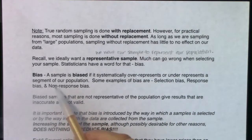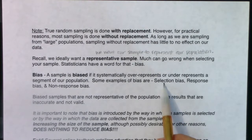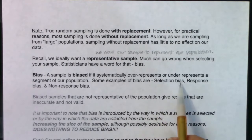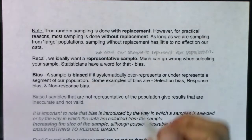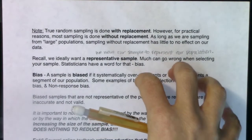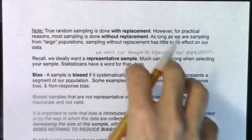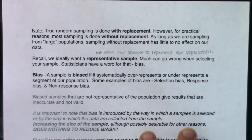Let's give a quick example of each. For selection bias: let's say you're going to take a poll of how people feel about the upcoming election. You get a list of cell phone numbers and start randomly dialing them, asking who they're going to vote for. If you are limiting your sample to just the folks with cell phones and not considering landlines, you are systematically under-representing the folks that only have landlines.